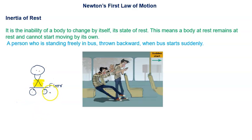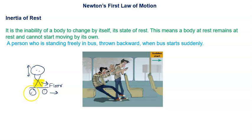Suddenly when the bus comes into motion, the lower part which is in contact with the floor of the bus starts to move, but the upper part remains as it is. So basically, our lower part is moving with the bus but the upper part remains, and we feel that the upper part is going in the backward direction.